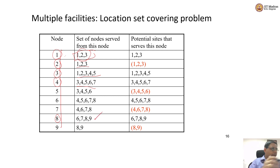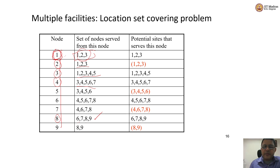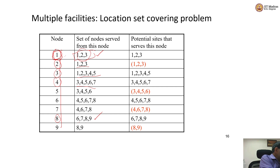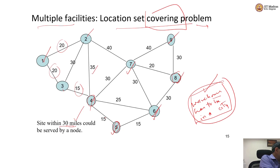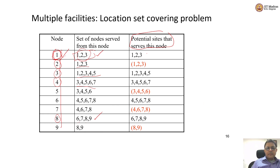Now let us ask a different question: what are the different ways of serving node 1? What are the different potential sites whose facilities can serve city 1? Having a facility at node 1 will definitely serve node 1. Having a facility at node 2 will also serve node 1. Having a facility at node 3 will also serve node 1. So those are the potential sites that cover node 1.